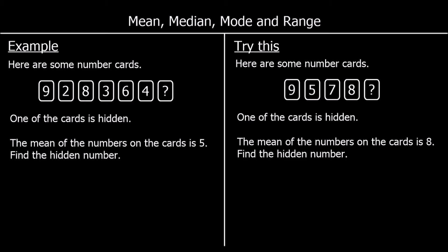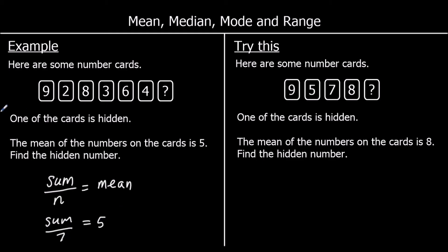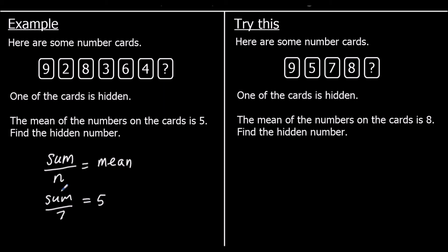Here we have a different question. We have some number cards and one card is hidden. We know six of the numbers but not the seventh. We're told the mean is five. To find the mean, we add up all the numbers and divide by how many there are. We know there are seven numbers and the mean is five, so we multiply both sides by seven: the sum of all the numbers must be seven times five, which is thirty-five.